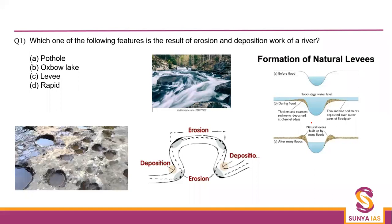The first question asks: which one of the following features is the result of both erosion and deposition work of a river? We have been asked about the feature where erosion and deposition work of a river can be seen. The first option is pothole. What is a pothole? We have seen this in our lectures.